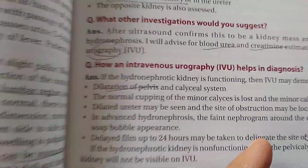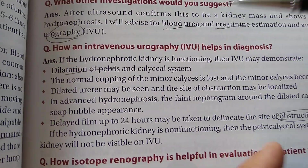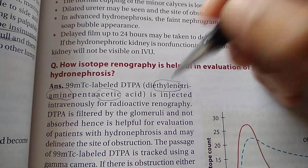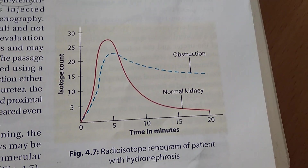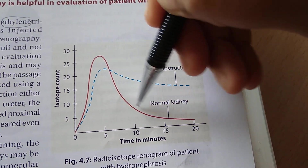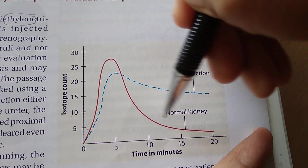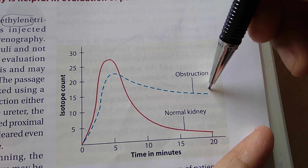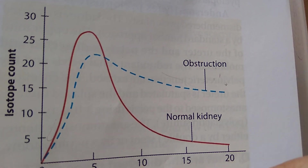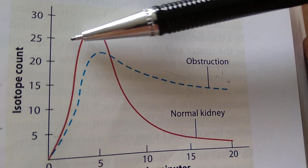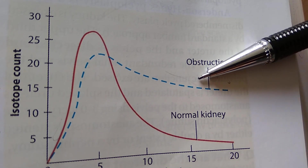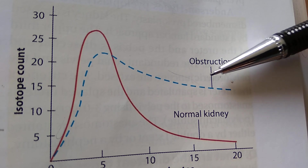With the DTPA scan, you can check for dilatation and obstruction. A photo of hydronephrosis is shown here. The graph shows that in a normal kidney the isotope count rises and falls, but in obstruction the isotope count does not fall — it remains trapped proximal to the obstruction and does not clear even after giving furosemide. So the radioactive substance gets trapped proximal to the obstruction.